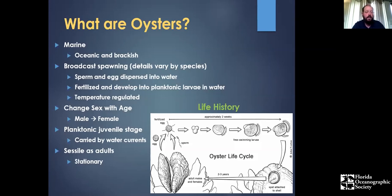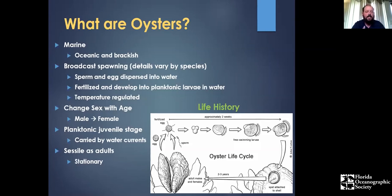Oysters can be pretty picky about where they settle. Because they're sessile as adults — once they settle, they're there for the rest of their life — they need to pick a good spot. They can choose based on things like calcium content of the structure and chemicals from other living oysters in the water. If other oysters can live there, it probably can too. We take advantage of this in our restoration program by using oyster shells to encourage spat to settle.